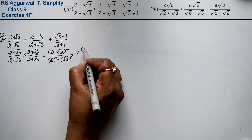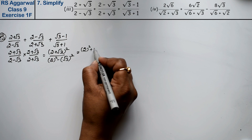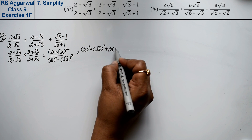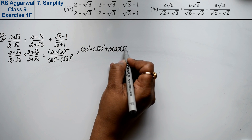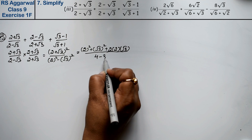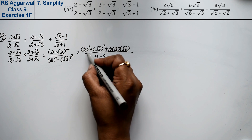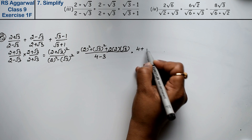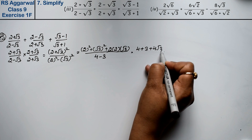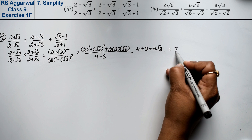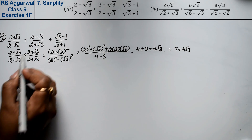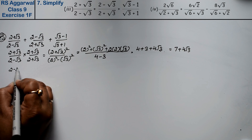The numerator is (2 + √3)² using the formula a² + b² + 2ab. So: 2² + (√3)² + 2×2×√3 = 4 + 3 + 4√3 = 7 + 4√3. The first fraction gives 7 + 4√3.